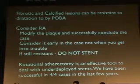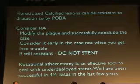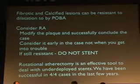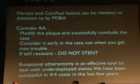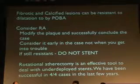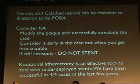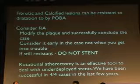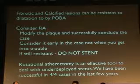In summary: fibrotic calcified lesions can be resistant to dilatation by plain balloon angioplasty alone. Consider rotational atherectomy — modify the plaque, successfully conclude the case. Consider it early in the case, not when you get into trouble. If still resistant, do not stent that artery. Rotational atherectomy is also an effective tool for under-deployed stents.